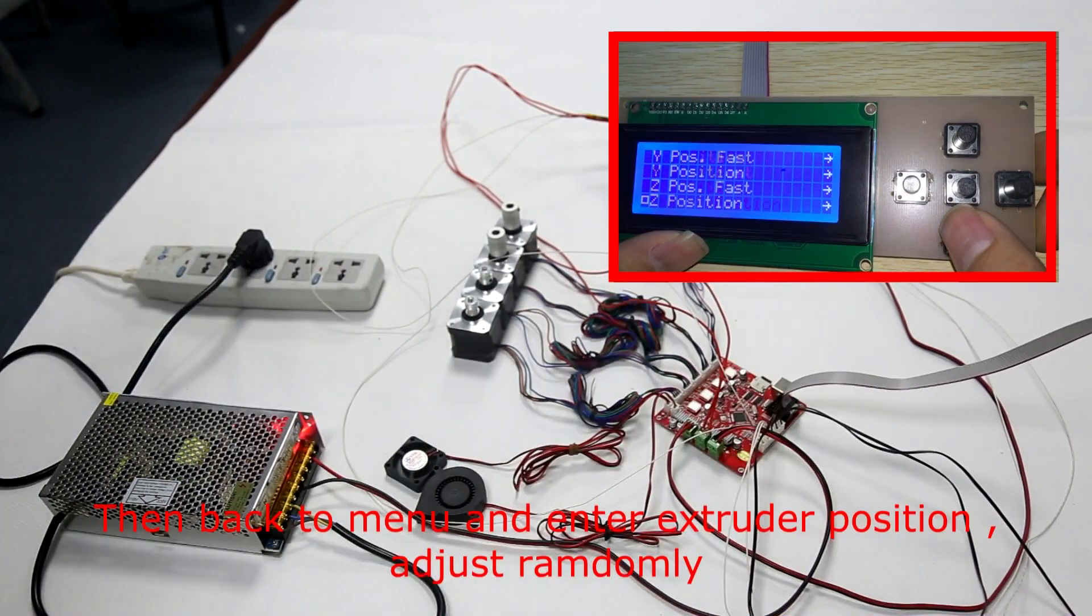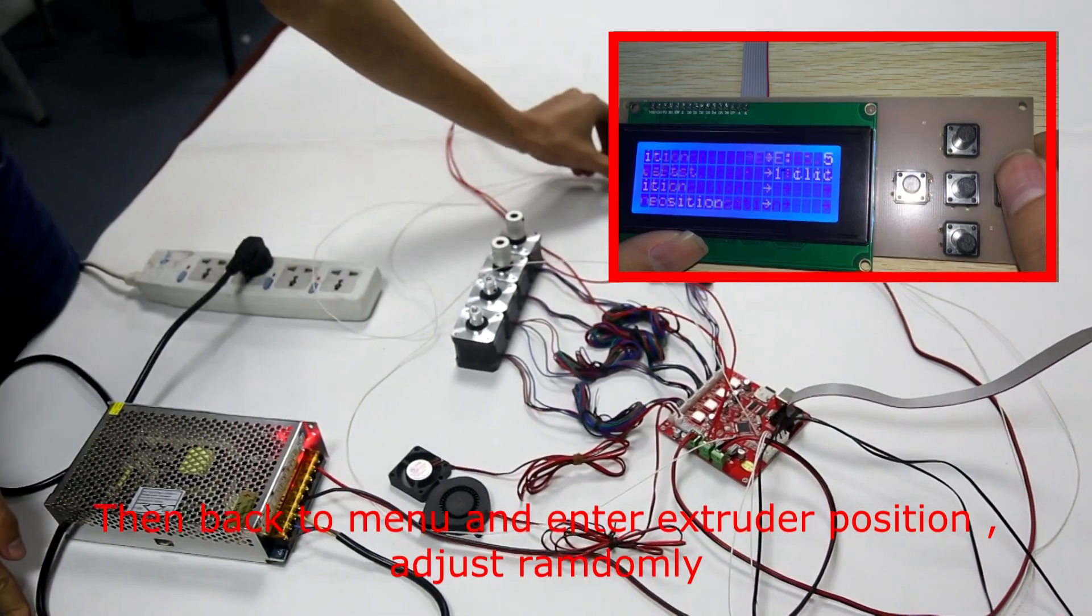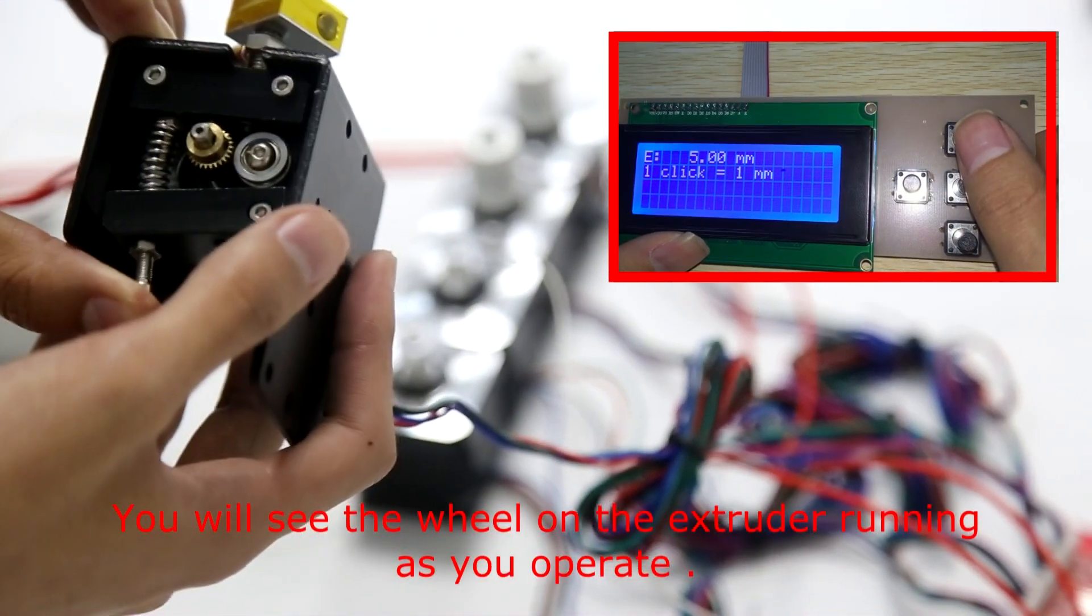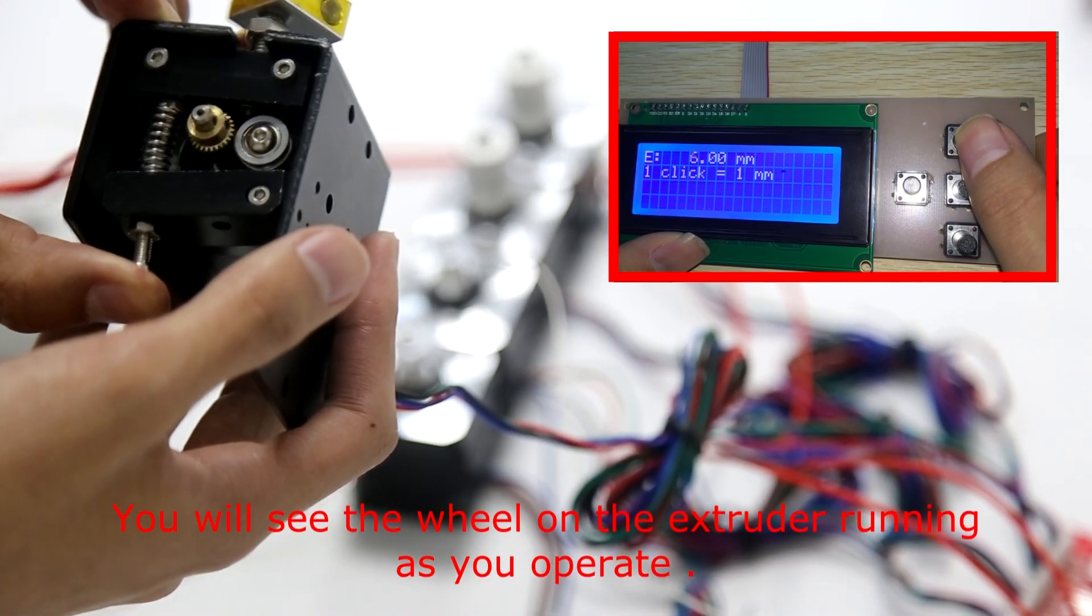Then, back to menu and enter extruder position. Adjust randomly. You will see the wheel on the extruder running as you operate.